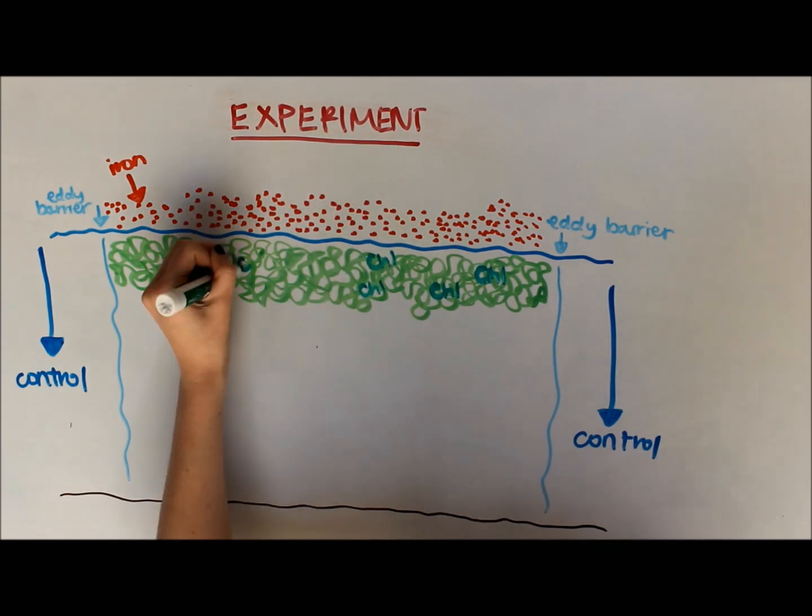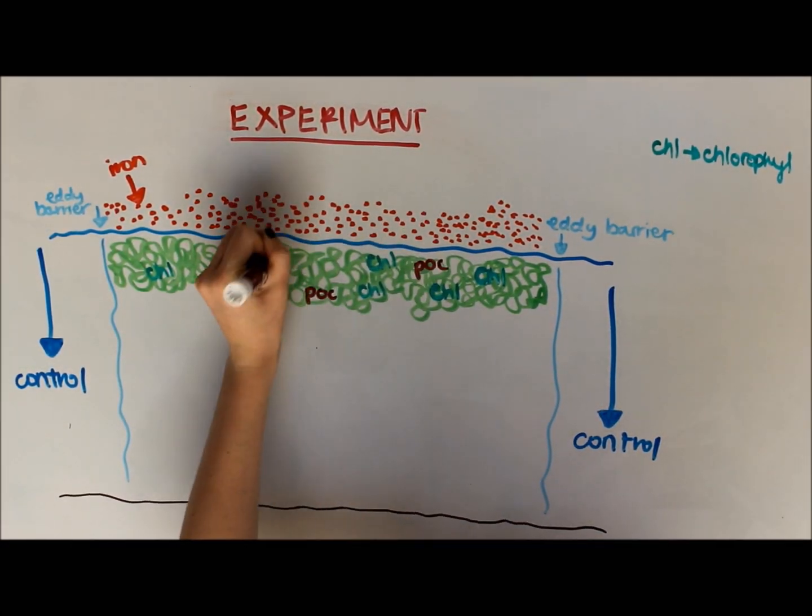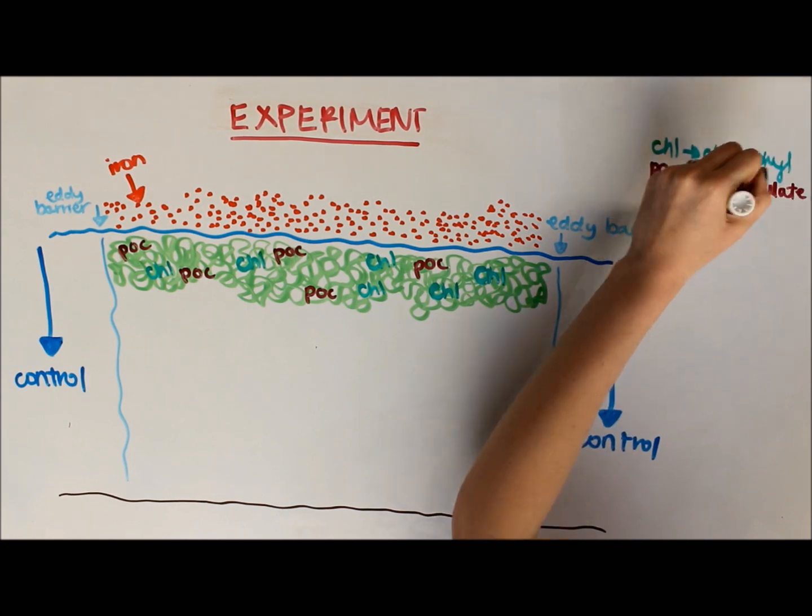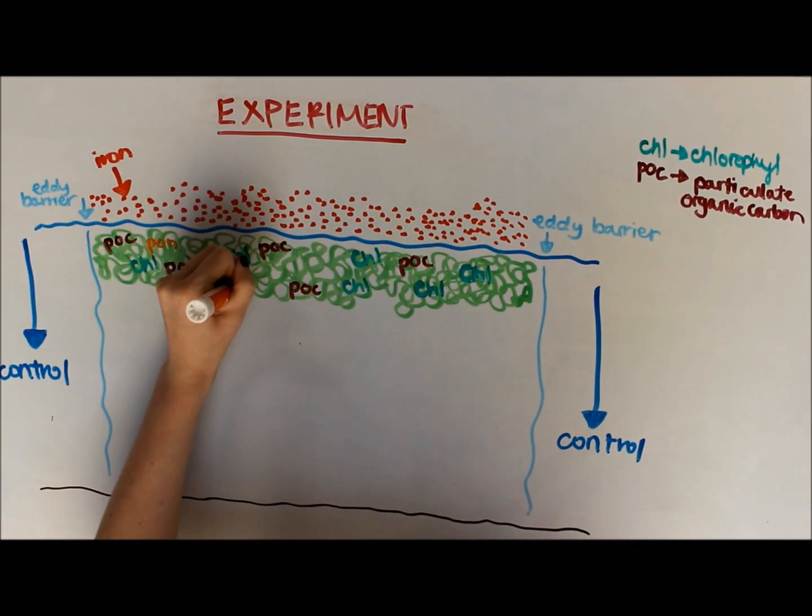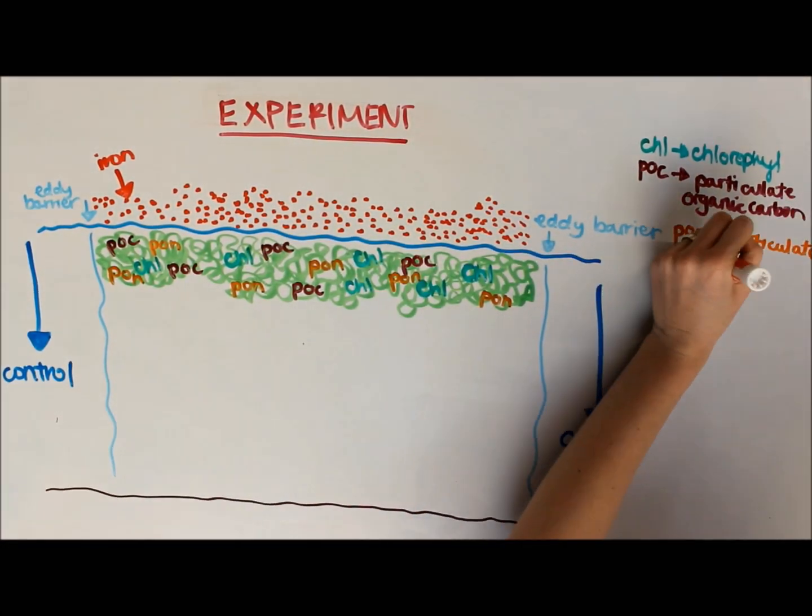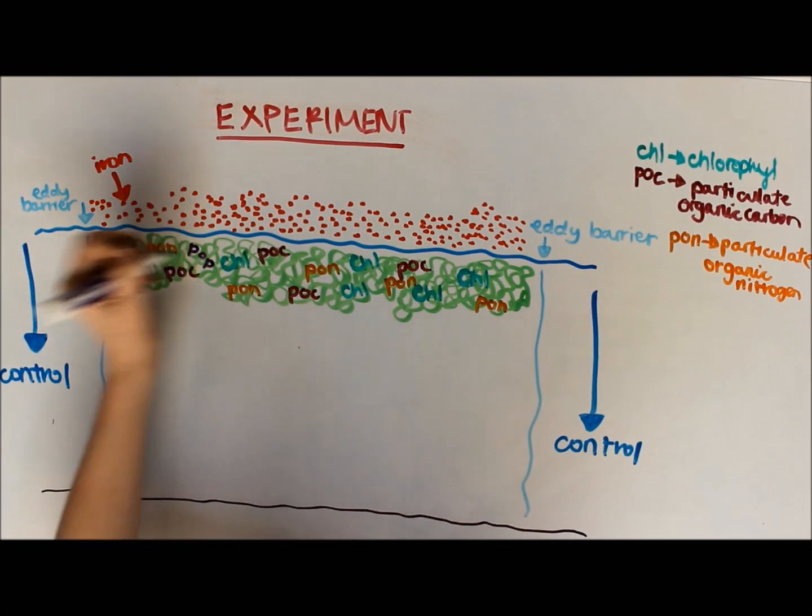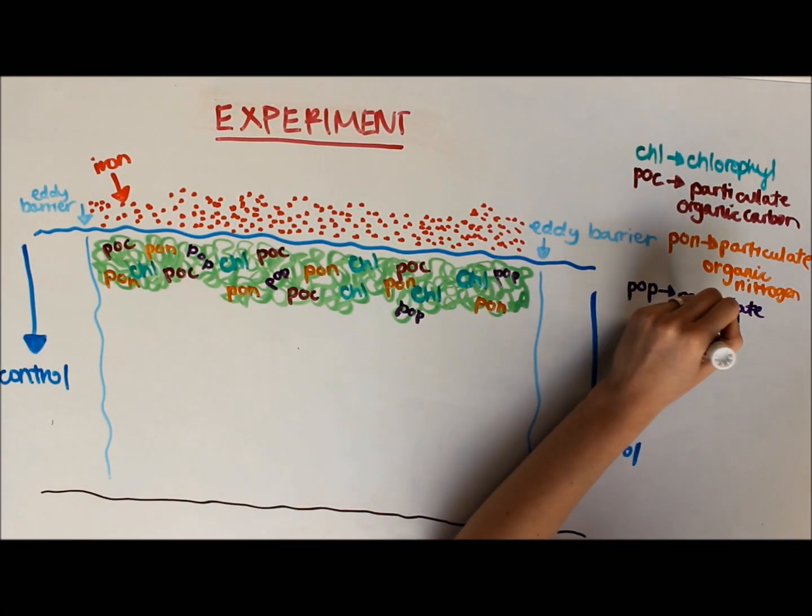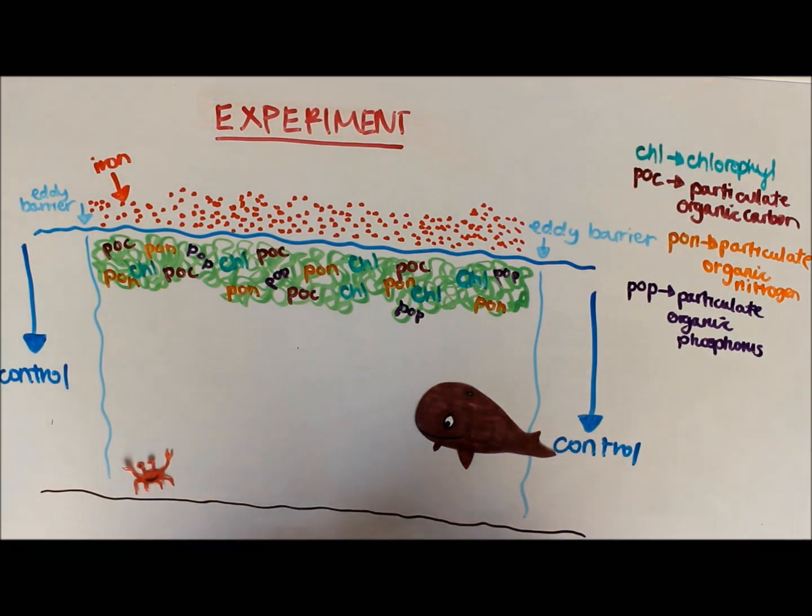The team recorded the amounts of chlorophyll represented by CHL, particulate organic carbon represented by POC, particulate organic nitrogen represented by PON, particulate organic phosphorus represented by POP, and they monitored the amount of dissolved nutrients in the water.